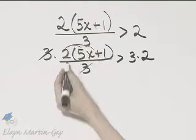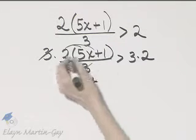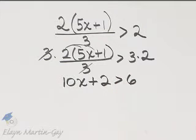I'll go ahead and use the distributive property. So that's 10x plus 2 times 1 is 2, and that's greater than 3 times 2, or 6.